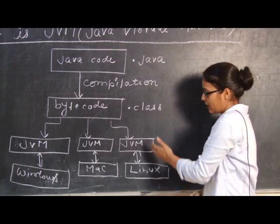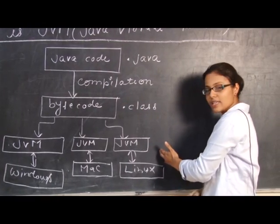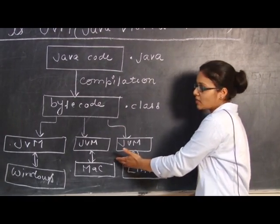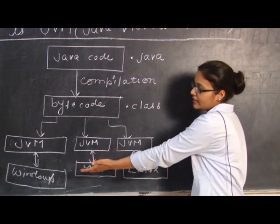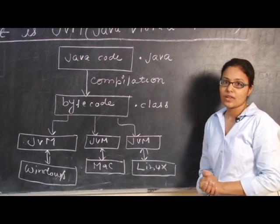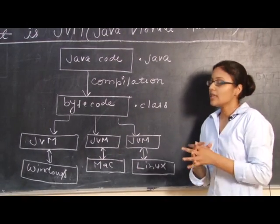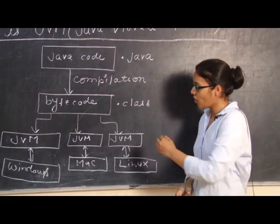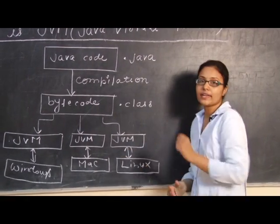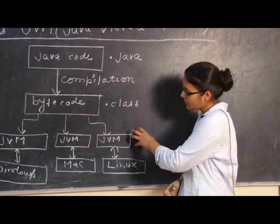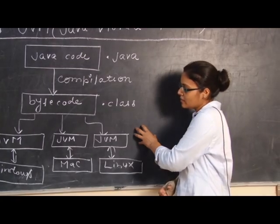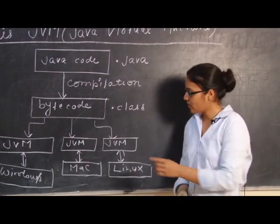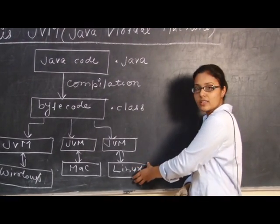Byte code can be run on the Linux operating system, on the Mac operating system, or on the Windows operating system. JVM is a built-in facility with all operating systems, and because of this JVM, Java byte code runs on the operating system.